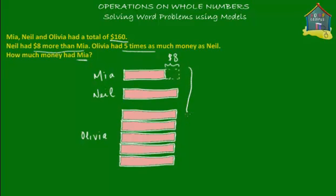Now from the word problem, Mia, Neil and Olivia have $160 altogether. Now that excludes this dotted part here — just this little pink block and these six pink blocks of the same size. Mia, Neil and Olivia have $160 altogether, and that excludes this $8 over here.